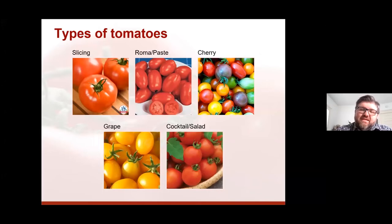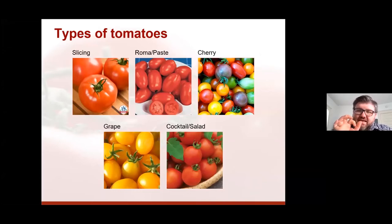And then we have three different types of little tomatoes. We have cherry tomatoes — those are the little tiny round ones. Kids love these. They're very small in size and great for salads.